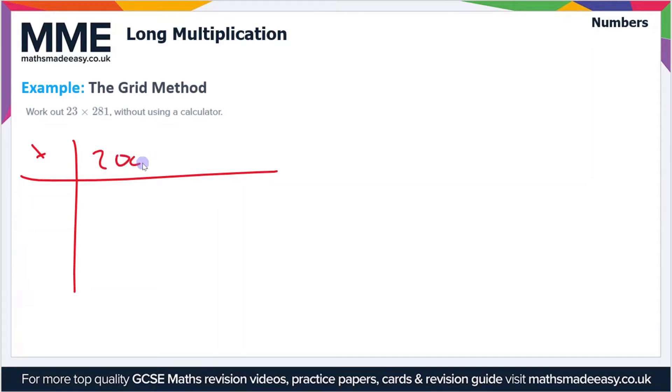Again, we'll make our grid. This time it's 281 times 23. Let's whiz through these then. So 2 times 2 is 4. We'll add these zeros in, so there's three zeros in total, so that's 4,000.